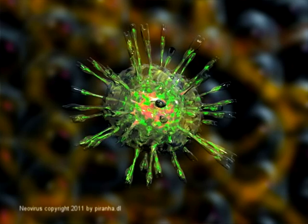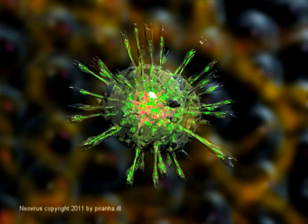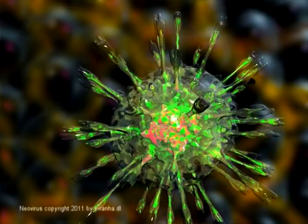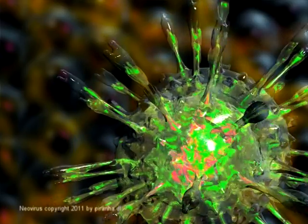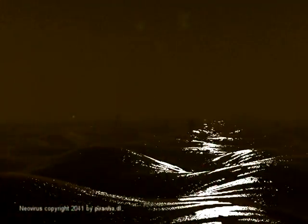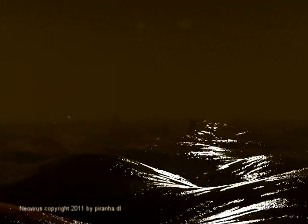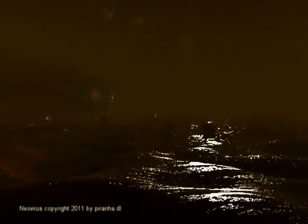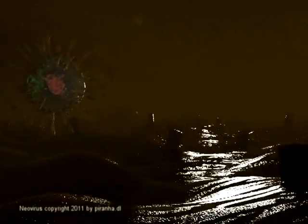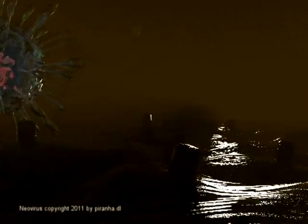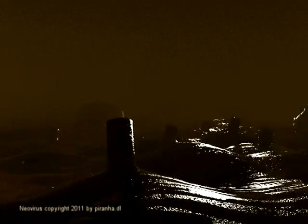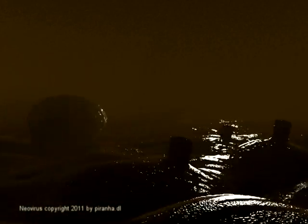Viral populations do not grow through cell division because they are acellular. Instead, they use the machinery and metabolism of a host cell to produce multiple copies of themselves, and they assemble in the cell. The genome replication of most DNA viruses takes place in the cell's nucleus if the cell has the appropriate receptor on its surface.